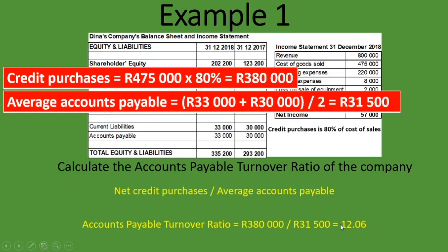Now that we have our numerator and denominator, the accounts payable turnover ratio is 380,000 rand divided by 31,500 rand, which gives us 12.06. As with any ratio, it is useless in and of itself without a comparative figure. We can compare this to the industry average, to competitors, or look at the trend over the years. For instance, if the previous year was 15 and now it's 12.06, it means last year we were paying our creditors faster — 15 times — and now we are only paying them 12.06 times.